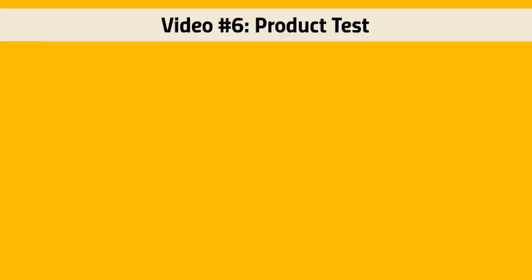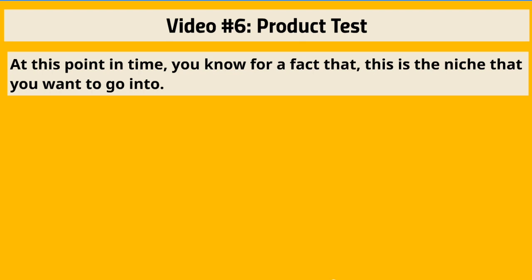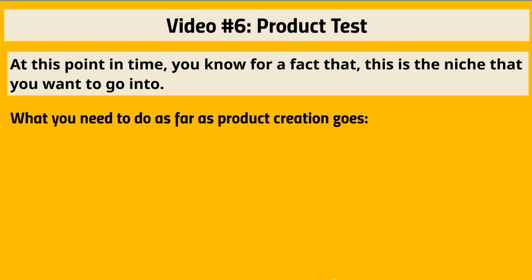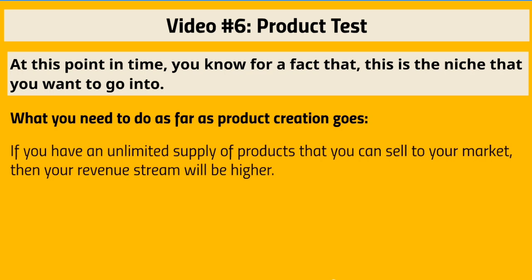Hello and welcome to video number six. Let's go ahead and do the product test. At this point you know for a fact what niche you want to go into, but now we need to make sure we're going to be able to profit from this blog. You need to figure out if you have an unlimited supply of products to sell to your market, because the more products you have, the higher your revenue stream is going to be.